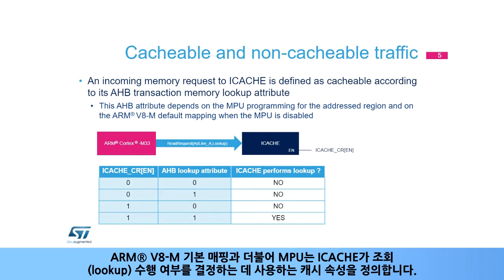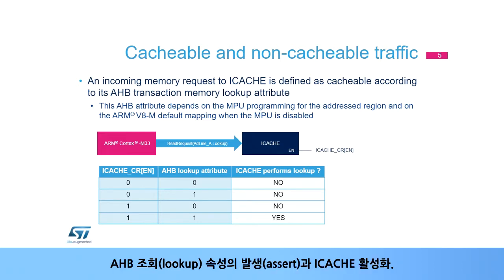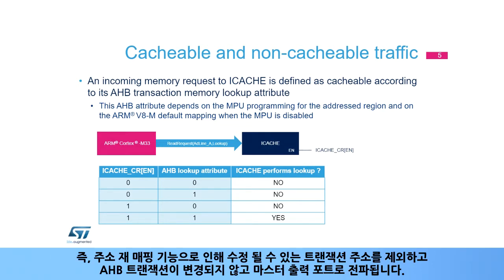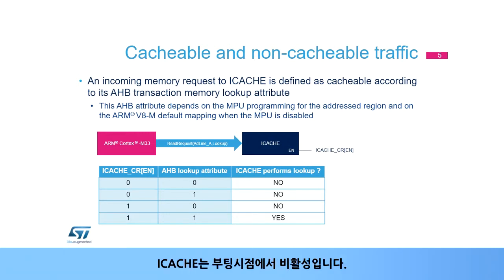The ARMv8-M default mapping and also the MPU define the cache attribute that the iCache uses to determine whether a lookup has to be performed. Two conditions have to be satisfied to perform the cache lookup: AHB lookup attribute asserted, and iCache enabled. In case of a non-cacheable access, iCache is bypassed, meaning that the AHB transaction is propagated unchanged to the master output port, except for the transaction address which may be modified due to the address remapping feature. The bypass and eventual remap logic doesn't increase the latency of the access to the targeted memory. iCache is disabled at boot.